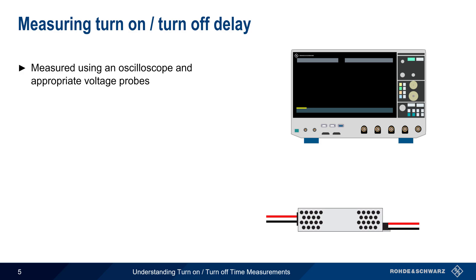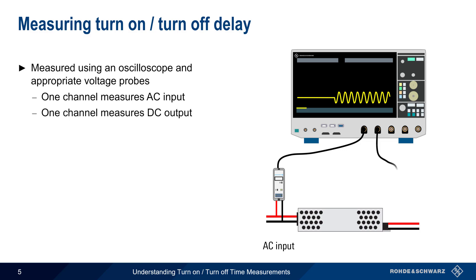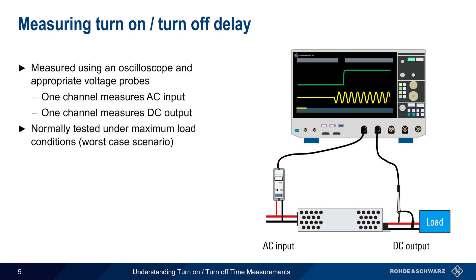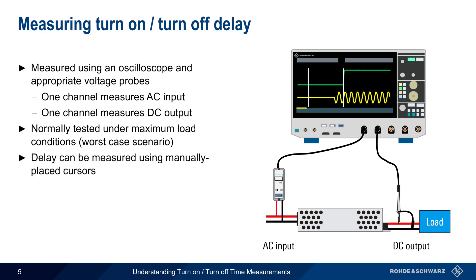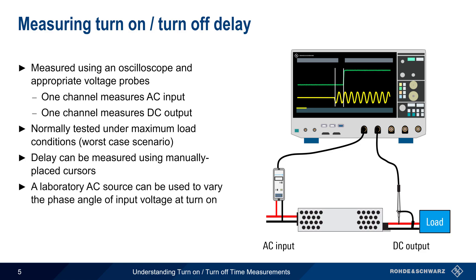Turn-on and turn-off delay are measured using an oscilloscope and appropriate probes. The measurement setup is very simple: one channel of the oscilloscope is connected to the AC input, and a second channel is connected to the DC output. Note that testing is usually conducted with a load attached to the output, often such that maximum current is drawn. Turn-off delay tends to be a function of the attached load characteristics. The delay can be measured by manually placing cursors and reading off the time difference between them. In some cases, the phase of the AC voltage at turn-on can affect the turn-on delay, and therefore a lab AC source, which allows control of the AC voltage phase, may be useful in some testing scenarios.